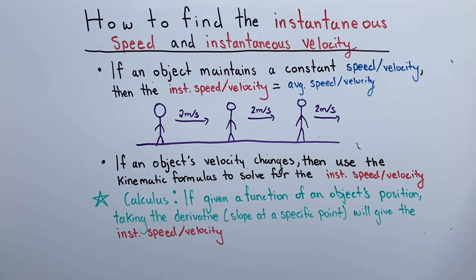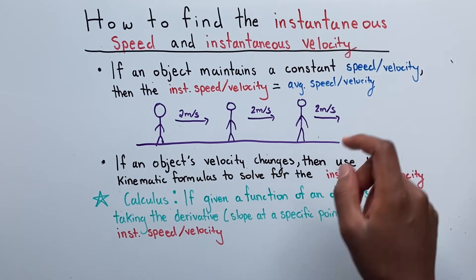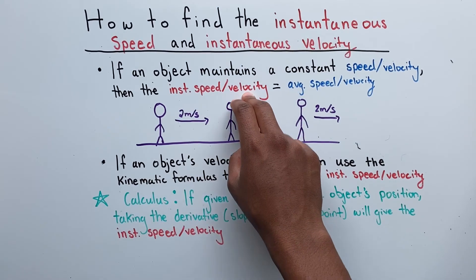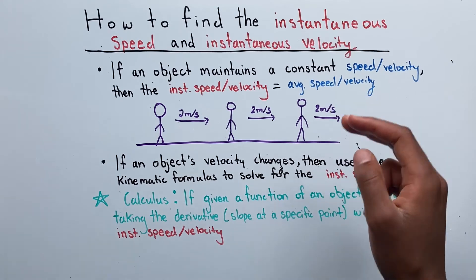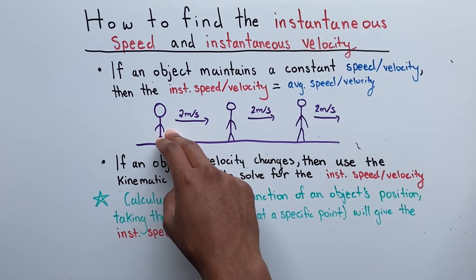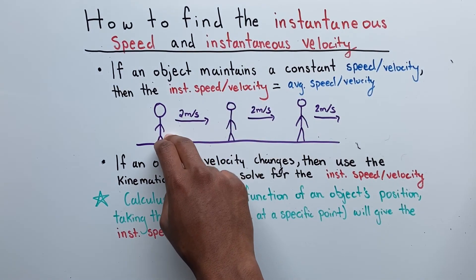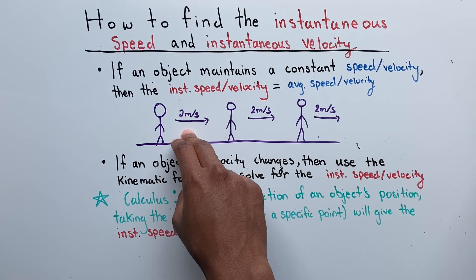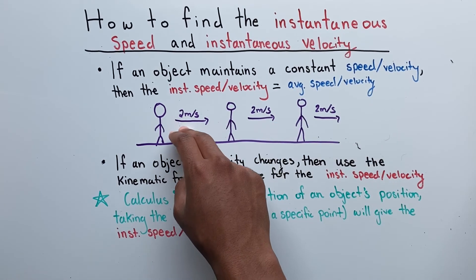Here are a few ways we can find our instantaneous speed and our instantaneous velocity. If an object maintains a constant speed and a constant velocity, then the instantaneous speed and the instantaneous velocity will equal our average speed and our average velocity. For instance, if our walker walked 2 meters per second constantly, that means the instantaneous speed and the instantaneous velocity of the walker will be 2 meters per second as well, because at each given moment in time, the walker's speed is 2 meters per second.